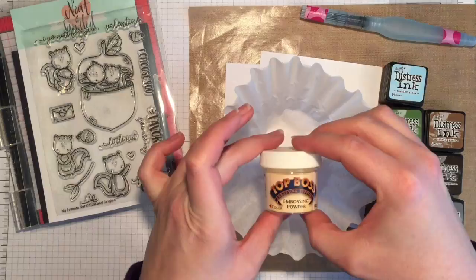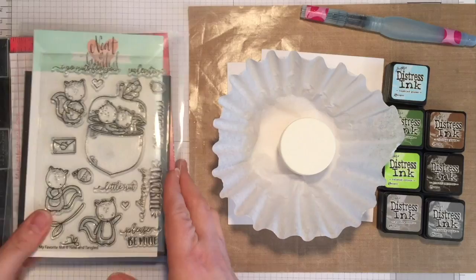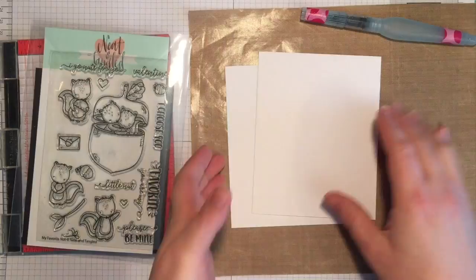I'm going to be embossing the Acorn image with VersaFine Onyx Black and clear embossing powder. So I'm going to start by getting my image into my MISTI just in case I don't get a good impression the first time.